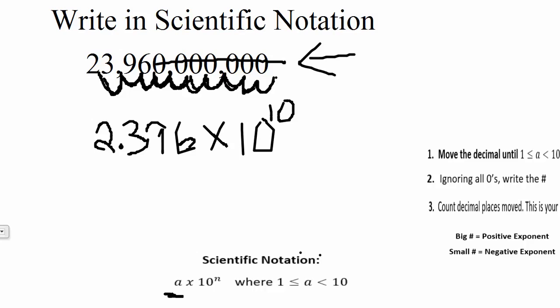If we had a small number, which is like less than 1, any decimal 0.00, we would add a negative exponent to it. So our answer in scientific notation is 2.396 times 10 to the 10th.